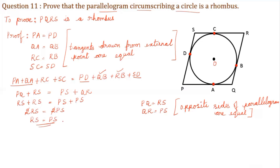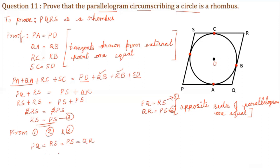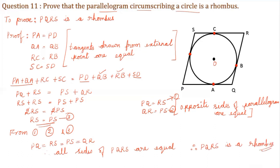We got RS is equal to PS. That is, two adjacent sides are equal. Now, PQ is equal to RS, QR is equal to PS, and RS is equal to PS. From equations 1, 2 and 3, we can write PQ is equal to RS is equal to PS is equal to QR. This means all sides of PQRS are equal. Therefore, PQRS is a rhombus. A rhombus is a parallelogram where all sides are equal.